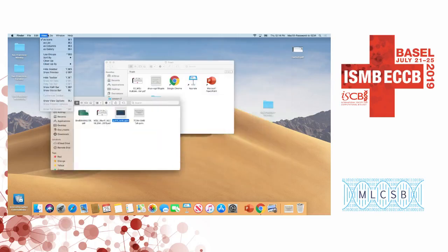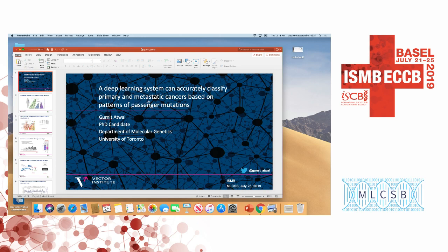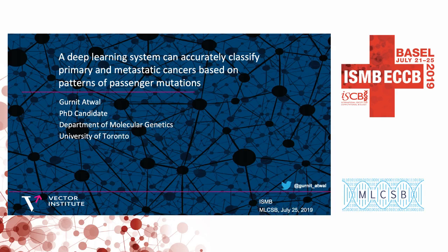This is a talk from the morning sessions by Gurnit Atwal from the University of Toronto. He'll talk about a deep learning system and the following paper: 'A deep learning system can accurately classify primary metastatic cancers based on patterns of somatic mutations.'